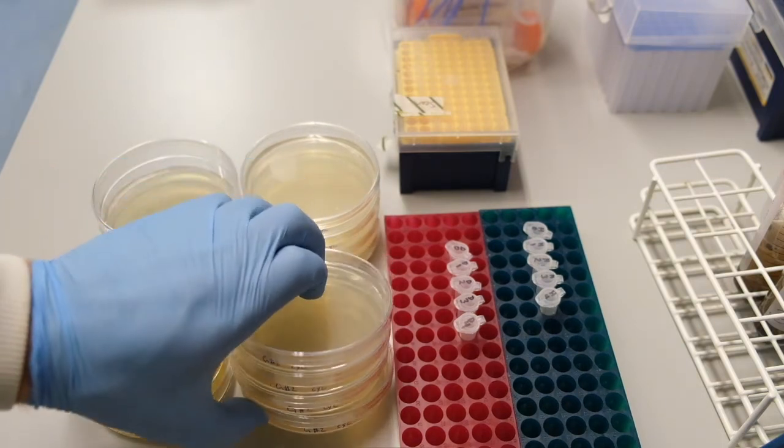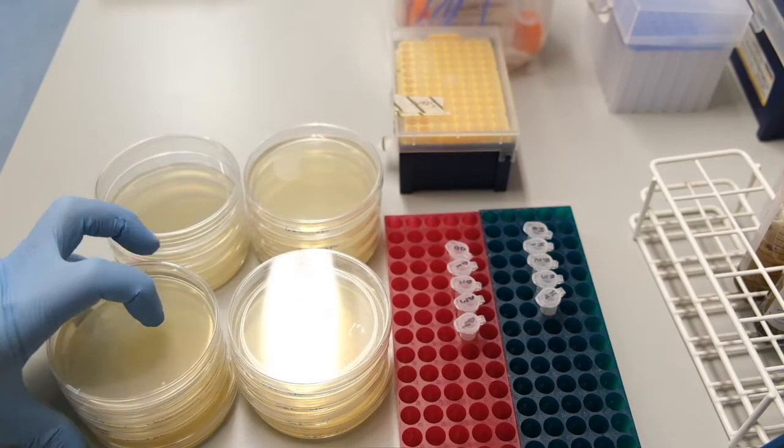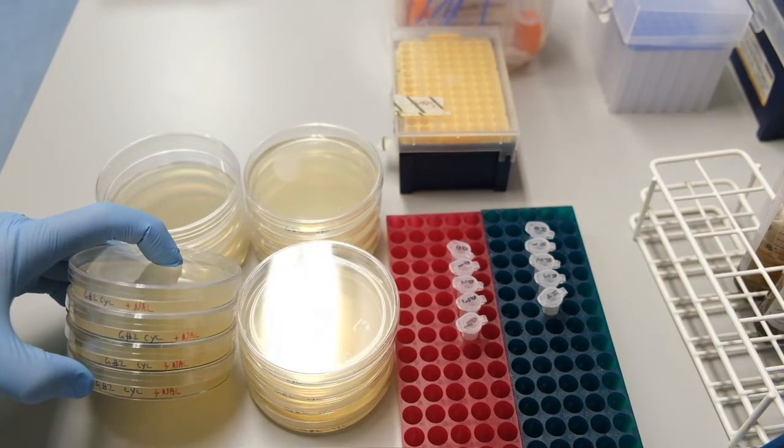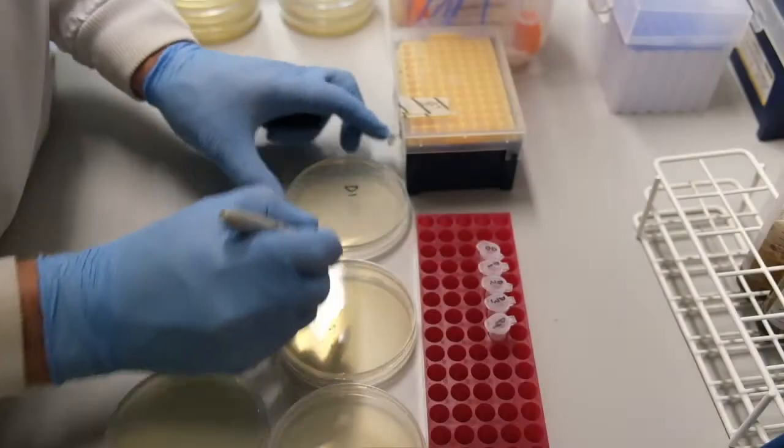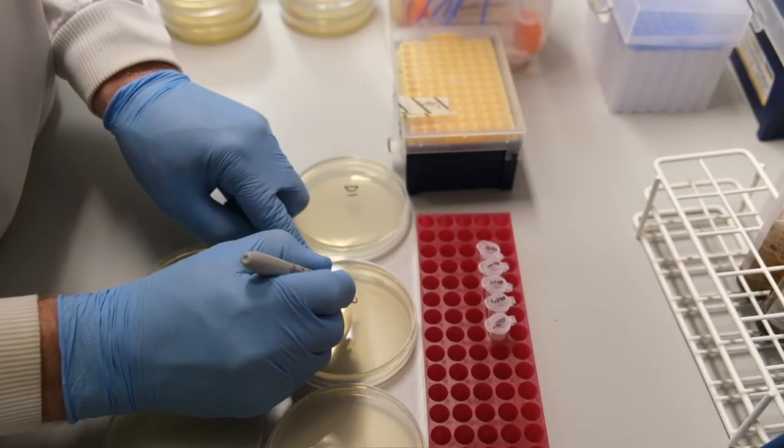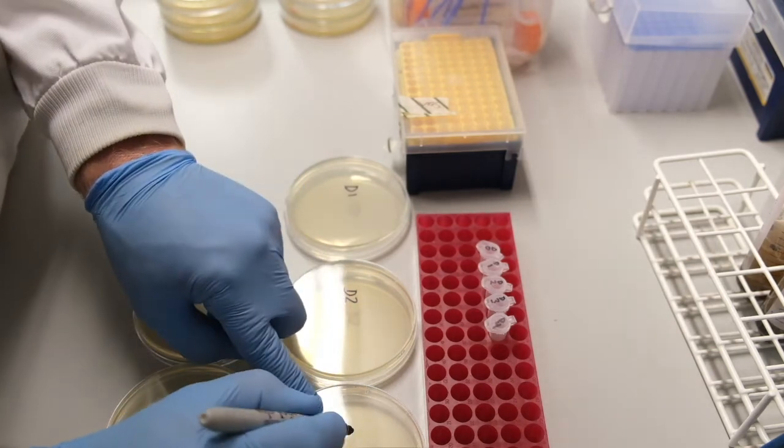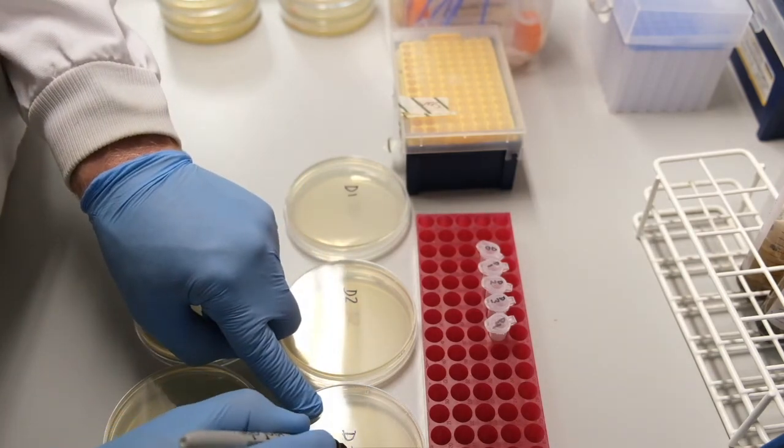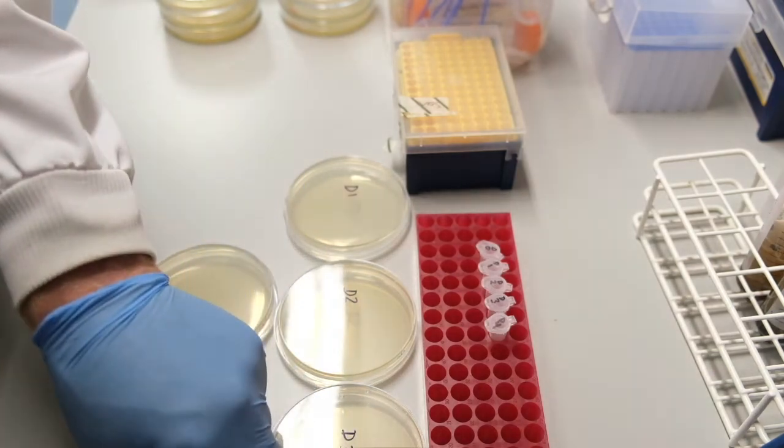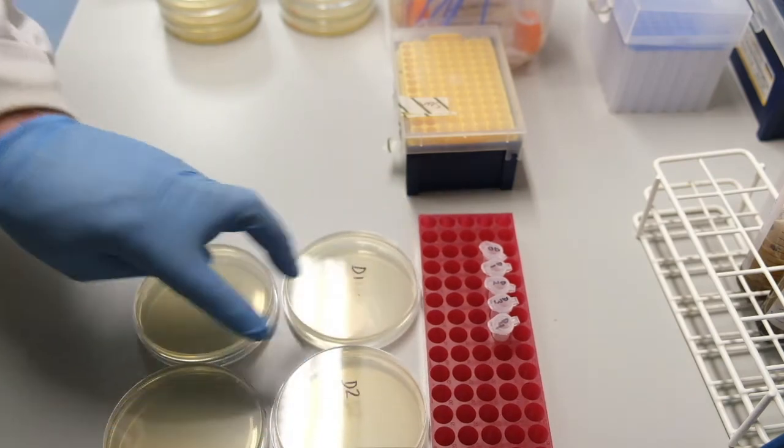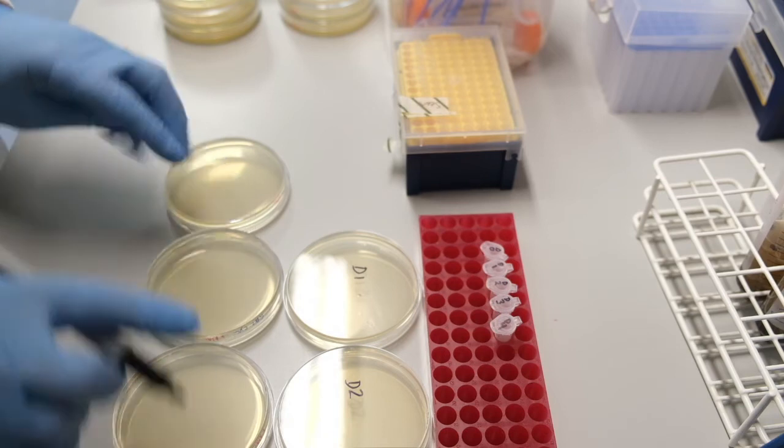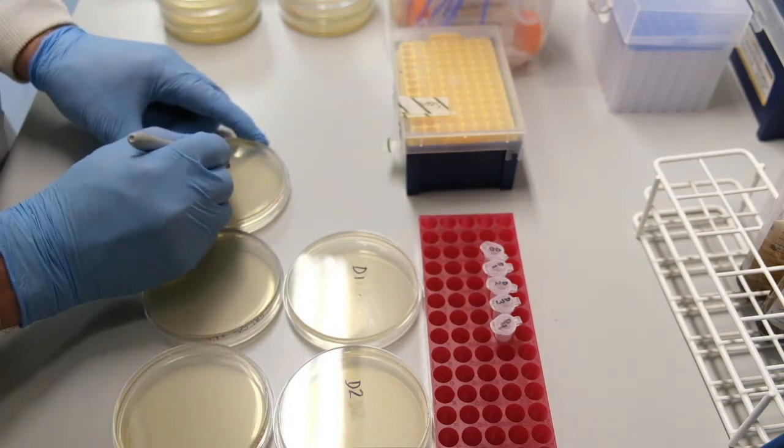We also have poured 8 GALS No. 2 agar plates containing cyclohexamide, and another 8 plates containing cyclohexamide and nalidixic acid. Cyclohexamide inhibits growth of fungi, nalidixic acid inhibits growth of many gram-negative bacteria. We label our plates as described in the lab manual.